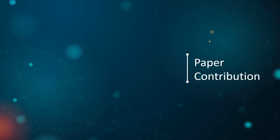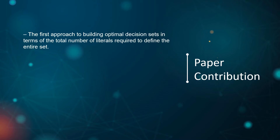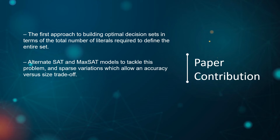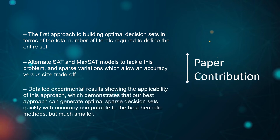The contributions of this paper are: the first approach to building optimal decision sets in terms of the total number of literals required to define the entire set; alternate SAT and MaxSAT models to tackle this problem and sparse variations, which allow an accuracy versus size trade-off. Detailed experimental results show the applicability of this approach, demonstrating that our best approach can generate optimal sparse decision sets quickly, with accuracy comparable to the best heuristic methods, but much smaller.